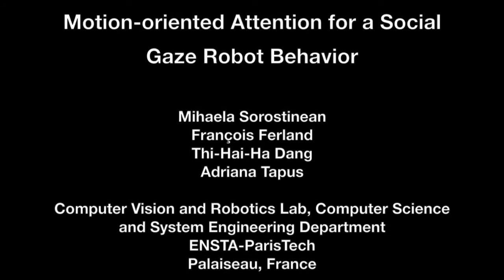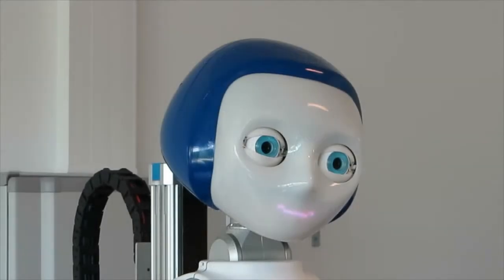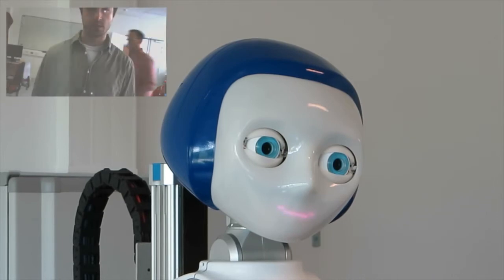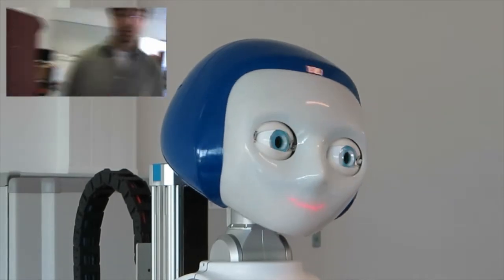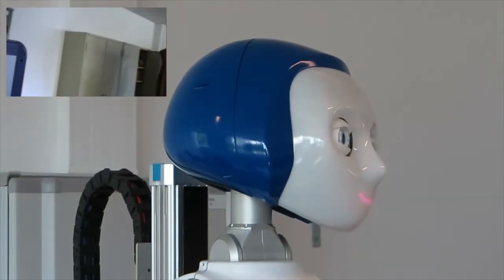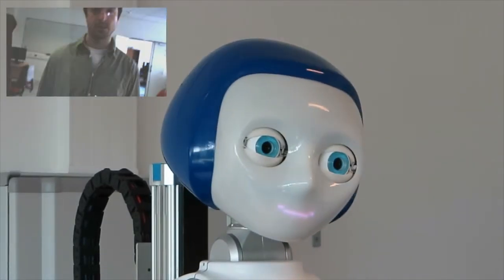Motion-Oriented Attention for a Social Gaze Robot Behavior. A possible way to achieve more natural and human-like robot behavior in interaction tasks is to design a distributed visual attention system that allows the robot to be distracted from the main interaction by external events.